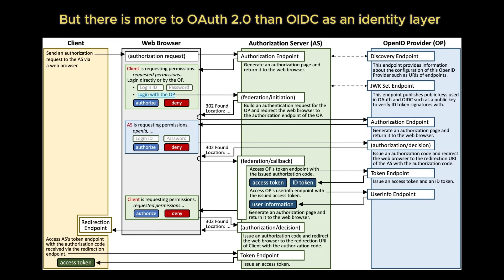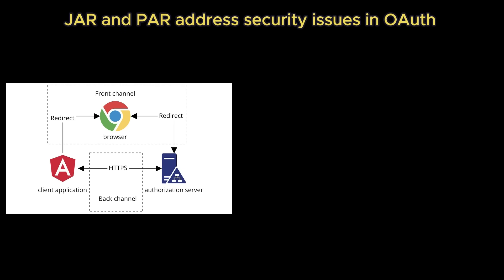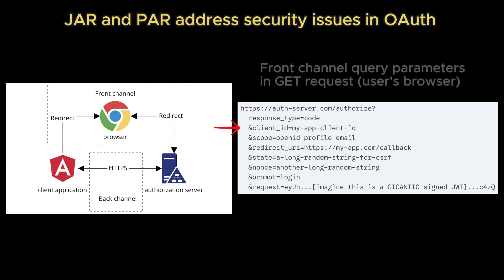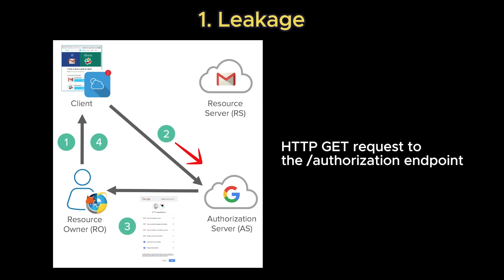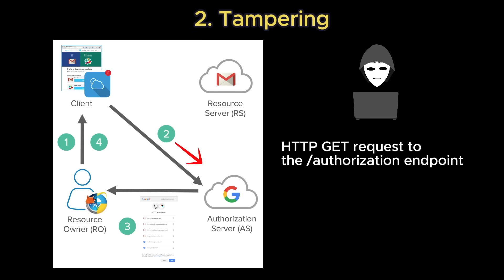There are a couple of advanced specifications and patterns that solve specific security and usability challenges. The first is enhancing authorization request security — specifically JAR and PAR. The standard authorization request passes all parameters like client ID, scope, and redirect URI in the browser's URL — the front channel. This has two main problems: leakage, where sensitive data can be leaked through browser history, proxy logs, and referrer headers; and tampering, where a malicious actor could intercept and modify the parameters, for example changing the requested scope.